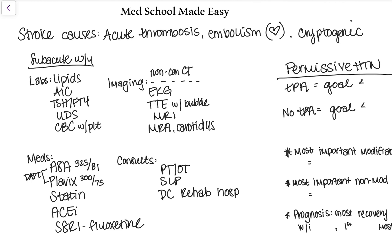The most common stroke causes are thrombosis from a large vessel. You can also have small infarcts in the lacunar region. You can also have embolism, typically coming from the heart, such as AFib, prosthetic valves, endocarditis, and acute MI where the flow is stopped briefly — it can also give you an emboli. And then a lot of strokes still fall under the category of cryptogenic, or unknown source. There are a multitude of different etiologies and sometimes you just can't figure out exactly why someone had a stroke.